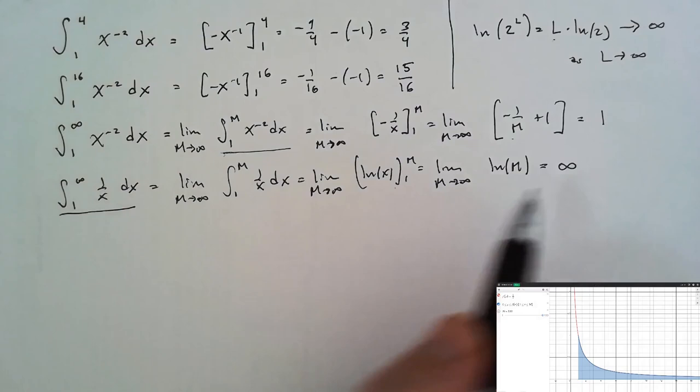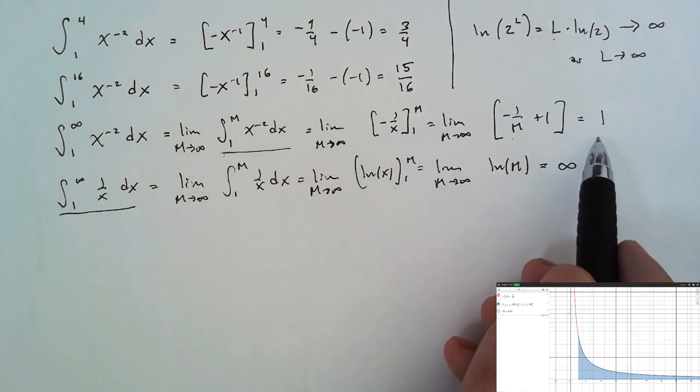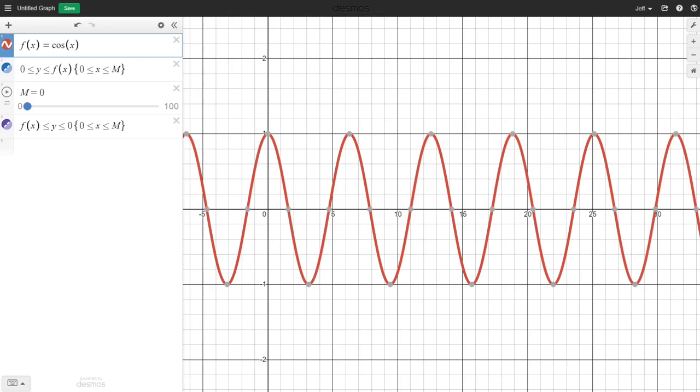If we now look at a graph of the function cosine x, and we were to integrate this from 0 to infinity, notice that we would add area, then subtract area, then add area, then subtract area, and so on.